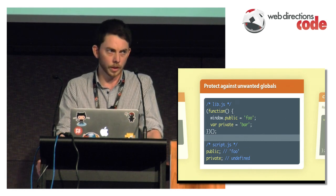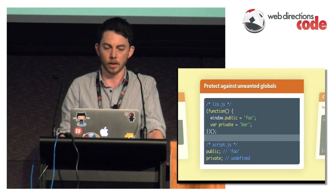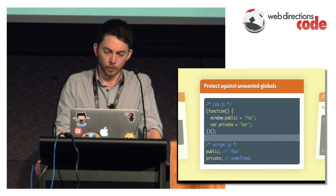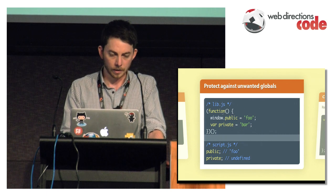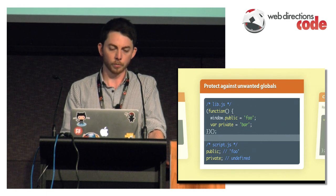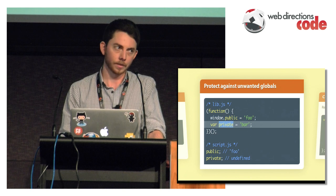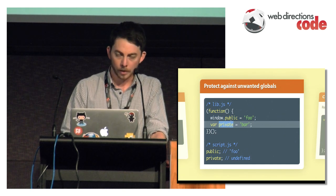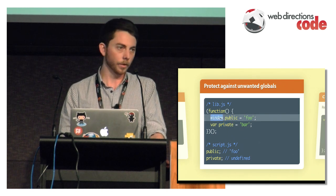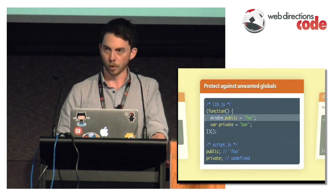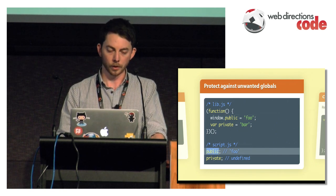The first use, which we've already touched on, is using an IIFE as a way to protect unwanted globals from leaking out of your code. Here you've got a library lib.js with a private variable called bar that doesn't go into the global scope because it's scoped to this function. If you do want a variable to be publicly available, you attach it to a global object like window, which is what libraries like jQuery do. So in your script.js you can access public but you can't access private.